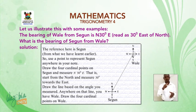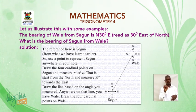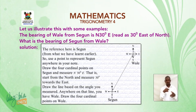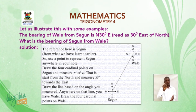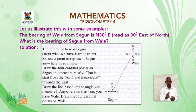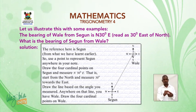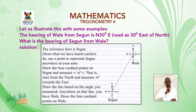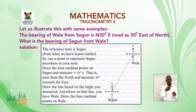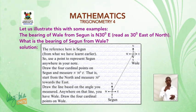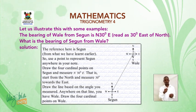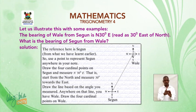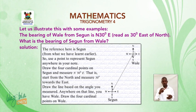The question is: what is the bearing of Shegu from Wali? The first thing is the reference — the reference here is Shegu. So use a point to represent Shegu anywhere in your notes. The next thing is draw the four cardinal points on Shegu and measure 30 degrees east of north. That is, you start from the north and measure 30 degrees towards the east. Then draw the line based on the angle you measured.